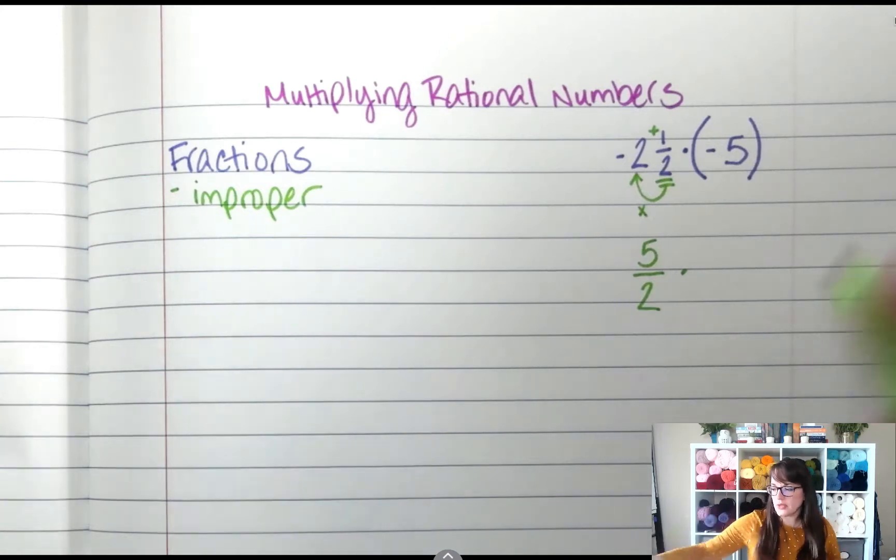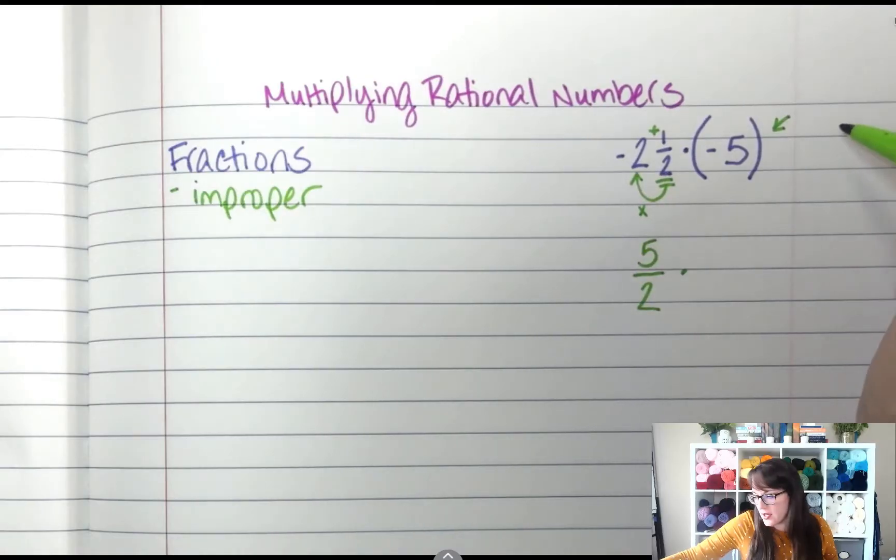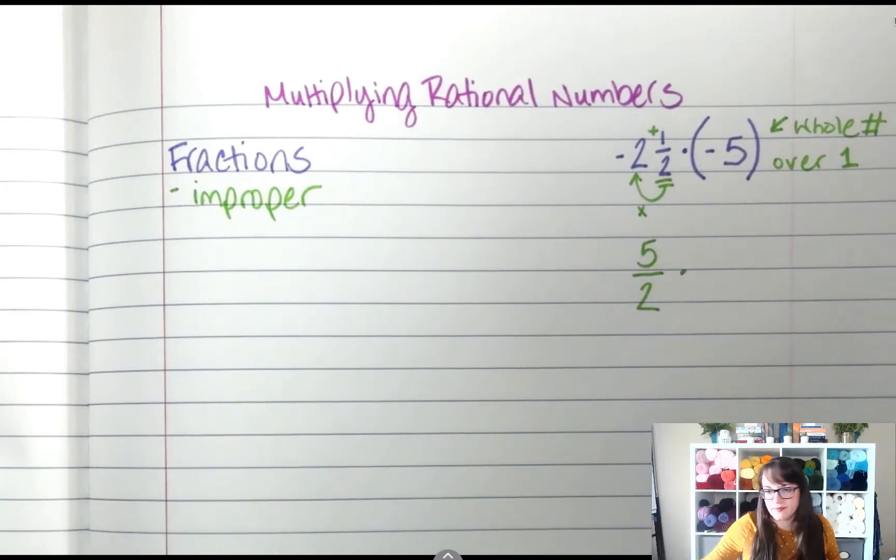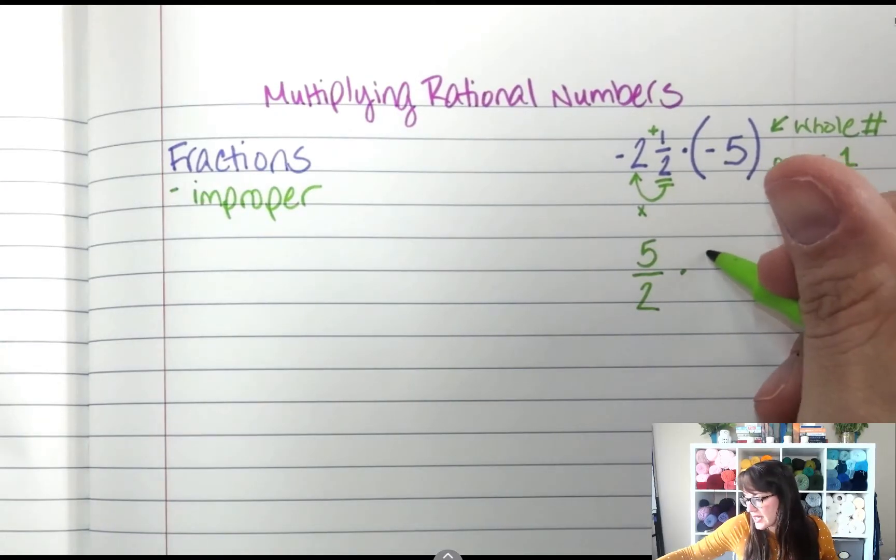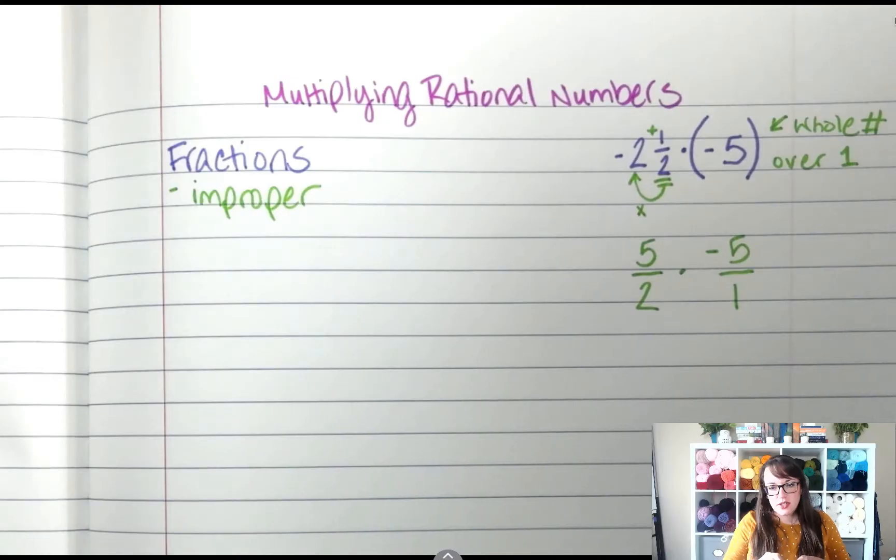So any whole number can be made into an improper fraction by putting it over a 1. Then whole numbers, use a number sign, over 1. So I'm going to write this one as negative 5 over 1. I got rid of my parentheses. That's okay. I changed it to my little dot.